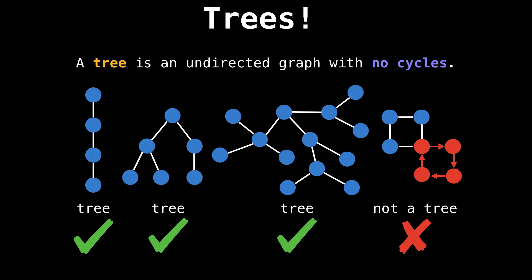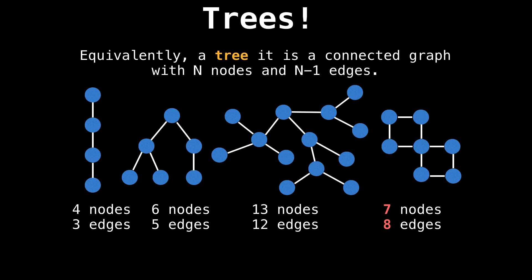However, there's an even easier way to check whether a graph is a tree or not. Each tree has exactly n nodes and n minus one edges. If we count up all the nodes and edges of each graph, you can see that all the trees have one less edge than the number of nodes, except for the rightmost graph, which is not a tree.